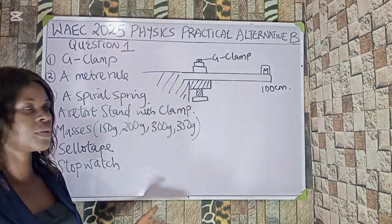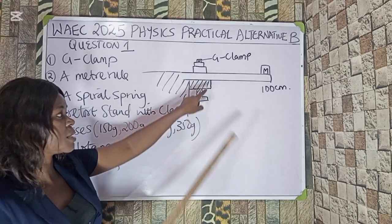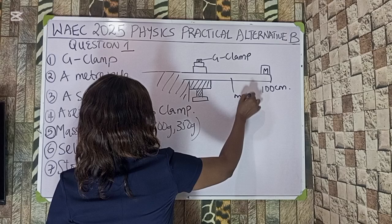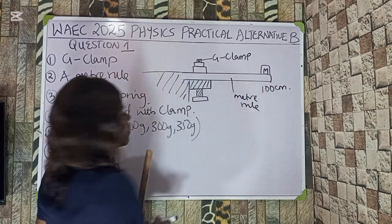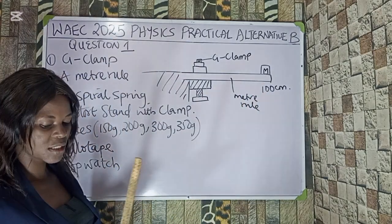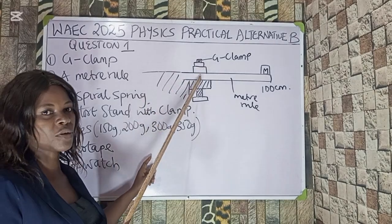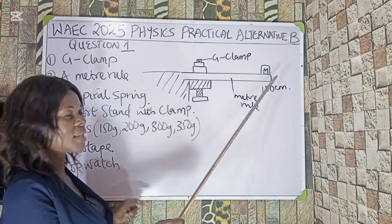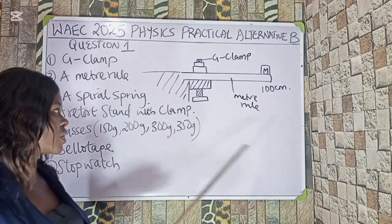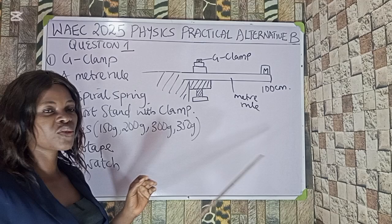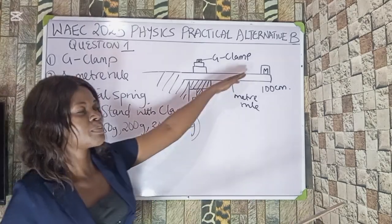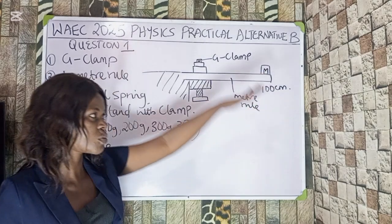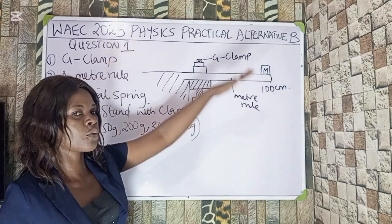This scenario is going to involve clamping a meter rule — probably at 10cm on one side — and the masses can be kept at 90cm or any distance on the meter rule. What we are going to do next is displace this mass a little to bend it, to have a vertical oscillation going to and fro.